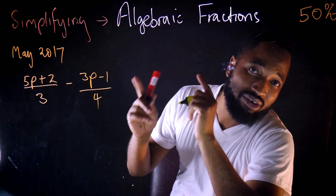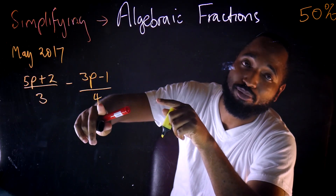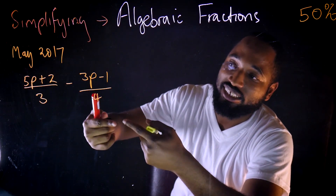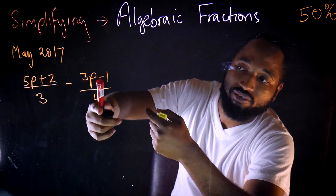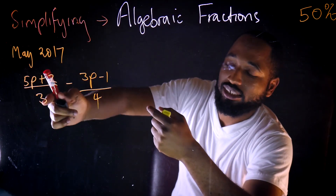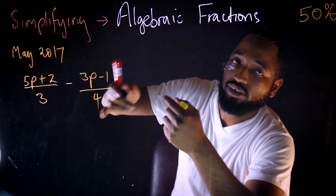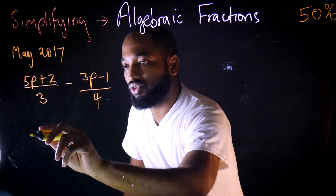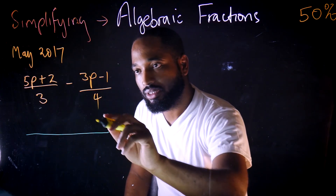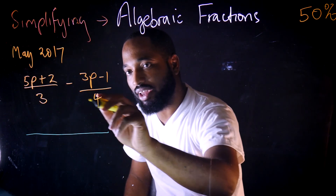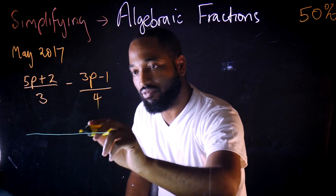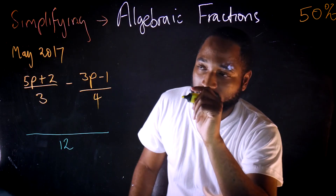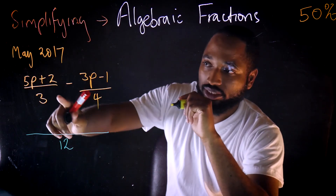The trick with algebraic fractions is looking at the denominator and finding the LCM. What is the LCM of 3 and 4? The LCM of 3 and 4 is 12. I would advise you to draw a big line and come find the LCM of 3 and 4, which is 12.